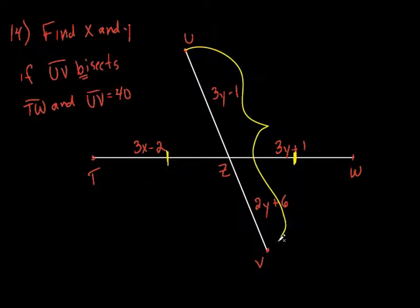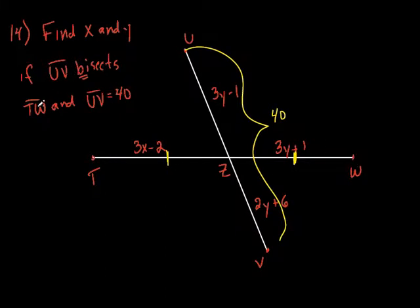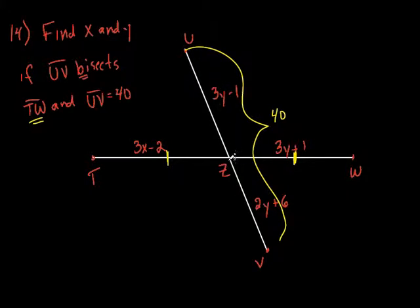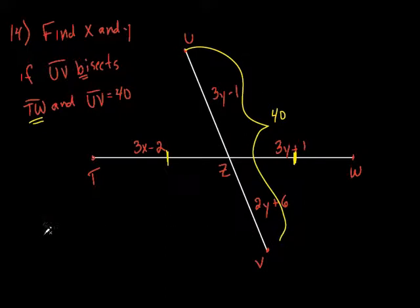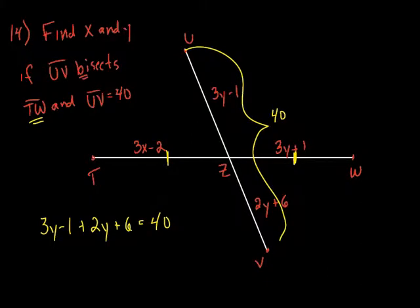This and this add up to be 40. It doesn't say they're equal to each other — they might be, but I can't just set them equal. They do add up to be the whole 40. So: 3Y minus 1 plus 2Y plus 6 equals 40. Now we can solve for Y. 3Y plus 2Y is 5Y, negative 1 plus 6 is plus 5, so 5Y plus 5 equals 40. Subtract 5, that's 35. Divide by 5 — Y is 7.